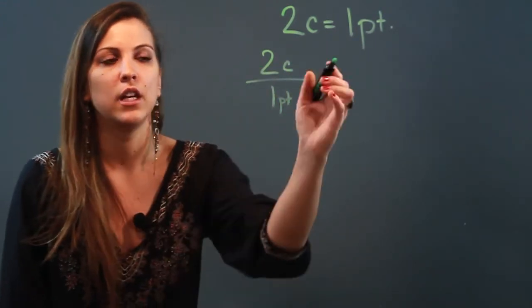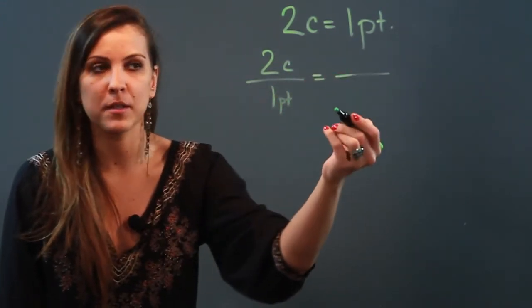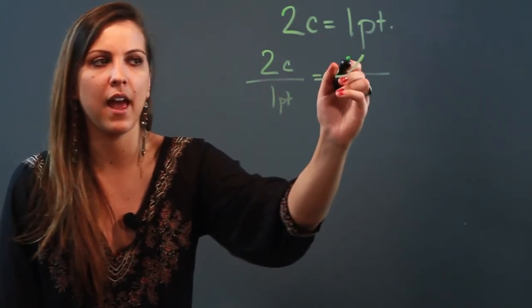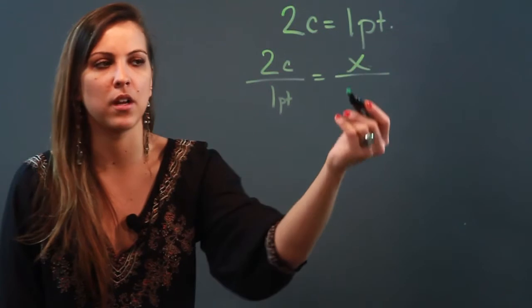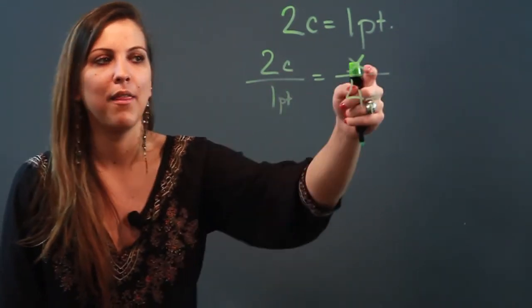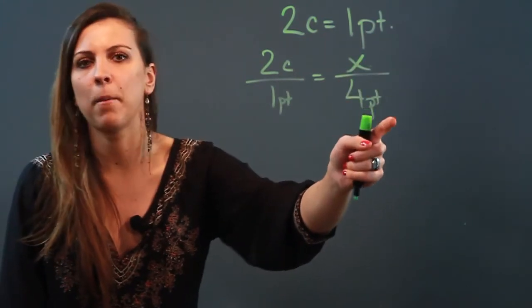let's say four pints and you want to know how many cups are in it, what I'm going to do is in my proportion, my two equal ratios, I'm going to put an x up by cups because I don't know how many cups there are and I'm going to convert four pints. Alright, so I have two cups is one pint, then how many cups is four pints.